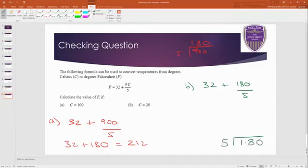5 doesn't go into 1. 5 goes into 18 3 times, remainder 3. 5 goes into 30 6 times. So technically we're doing 32 plus 36, which is 68. So 20 degrees Celsius is 68 degrees Fahrenheit.